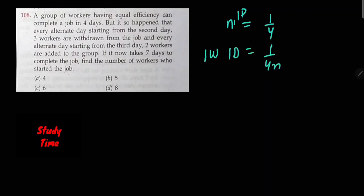Now, n workers worked on the first day. On the second day, n minus 3 workers. On the third day, n minus 3 plus 2, that is n minus 1 workers.